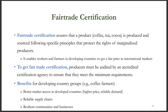Fair Trade Certification confirms that a product such as coffee, tea, or cocoa is produced following principles that protect the rights of marginalized producers. This enables workers and farmers in developing countries to get a fair price in international markets. To get Fair Trade Certification, producers must be audited by an accredited certification agency to ensure that they meet the minimum requirements. Fair Trade gives many benefits to farmers in developing countries, including improved market access in developed countries, reliable supply chains, and resilient communities and businesses.